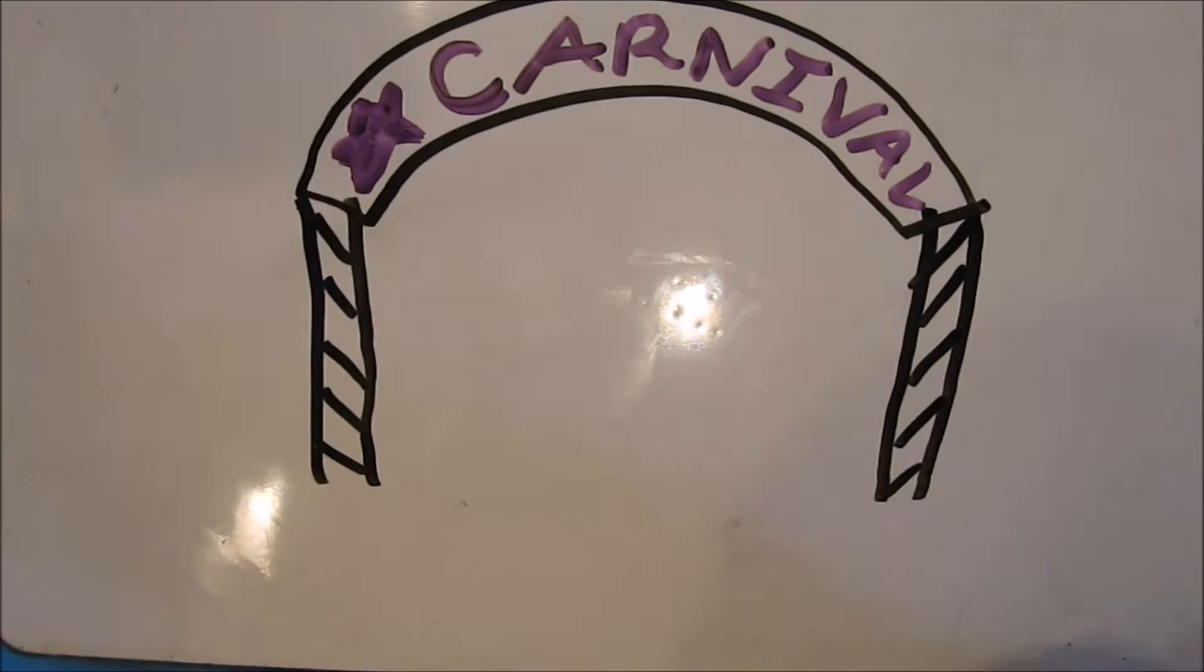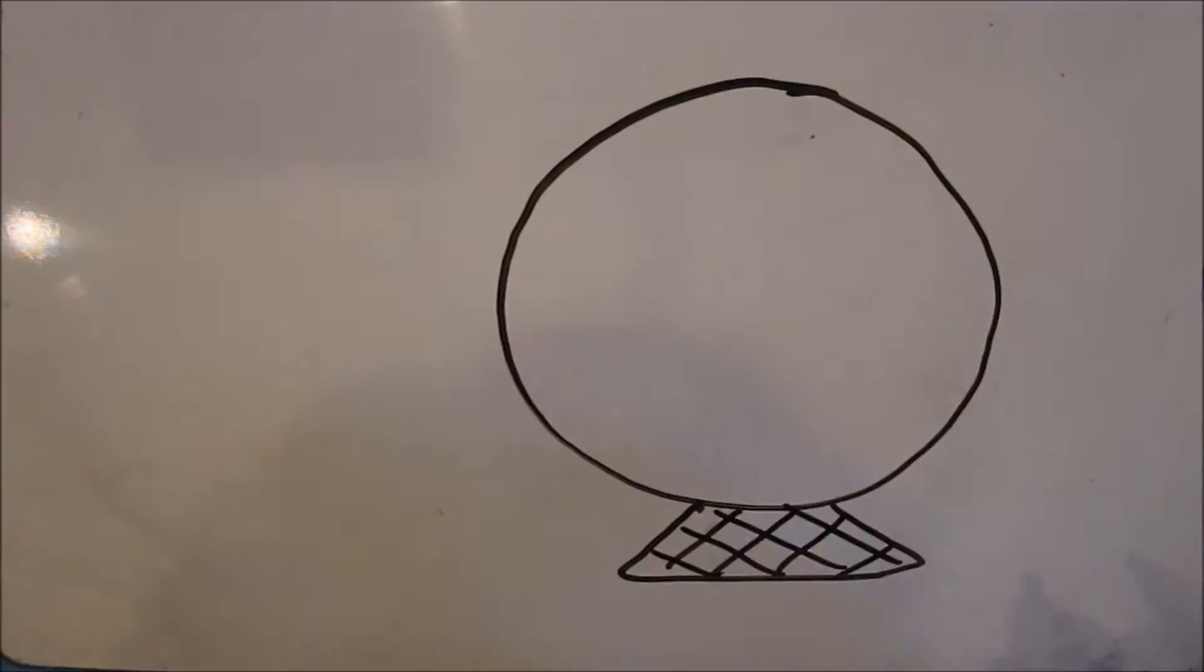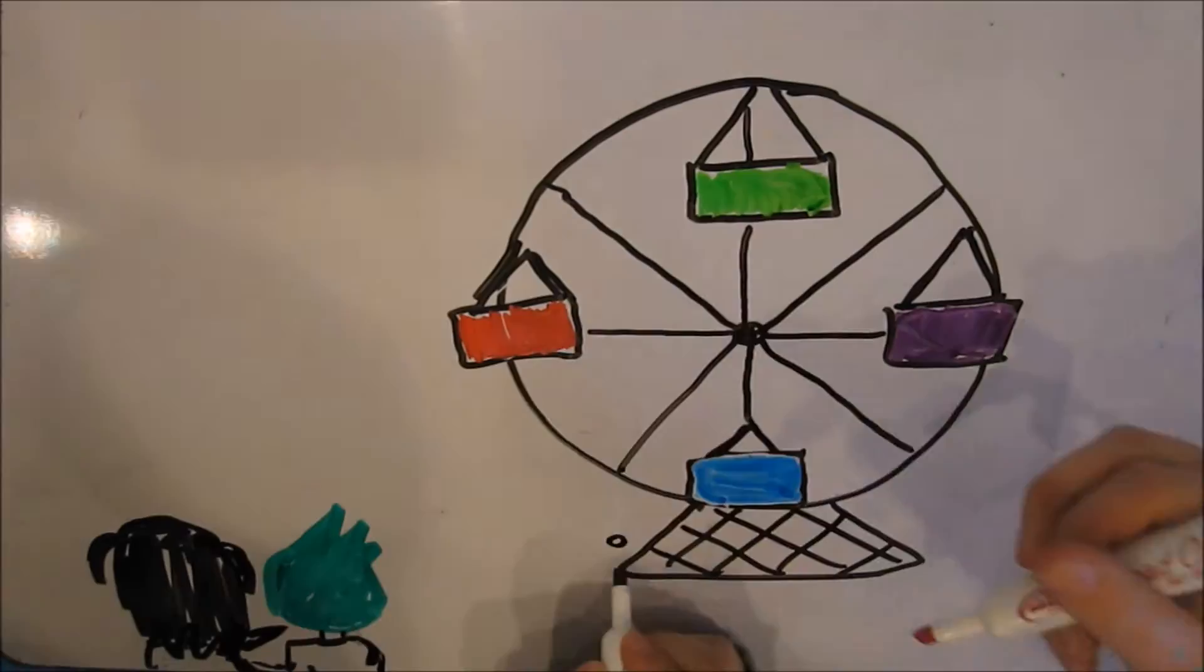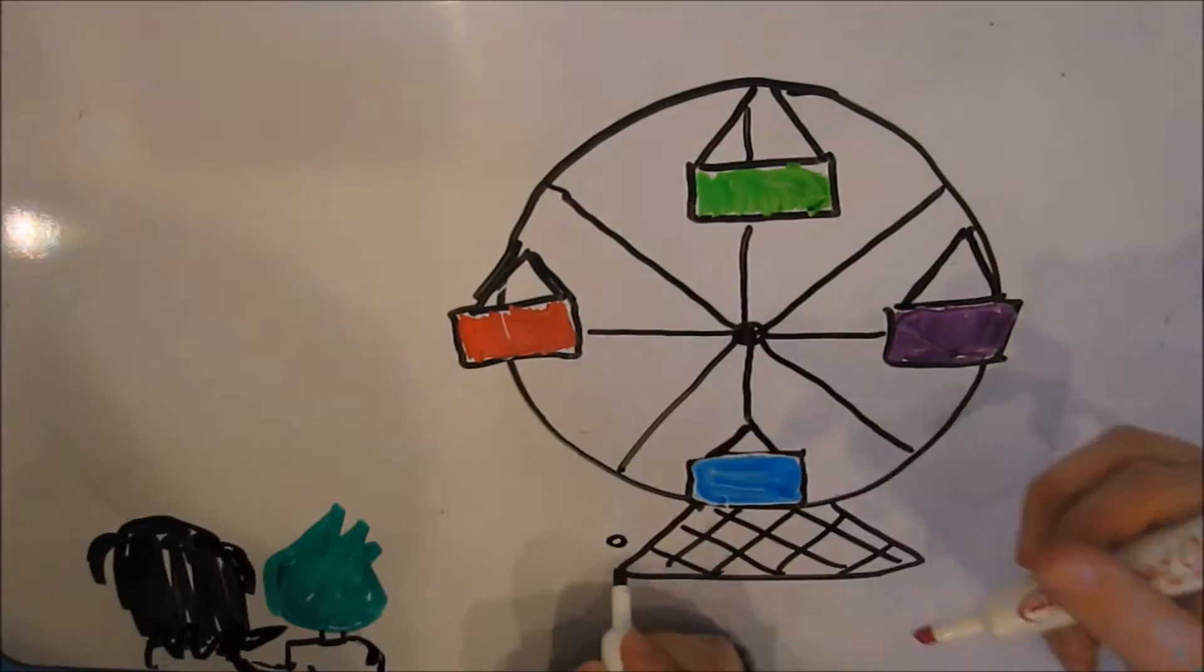For our first date, we went to the carnival. R-squared won me a giant teddy bear at the ring toss, and we got some apple pie at the food stand. Later that night, we took a wonderful ride on the Unit Circle Ferris Wheel.